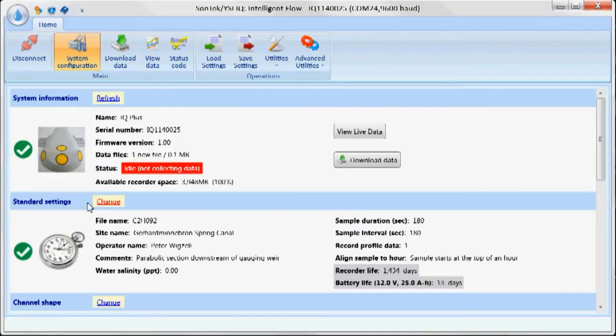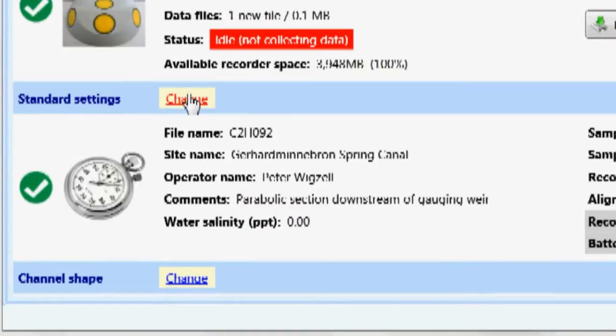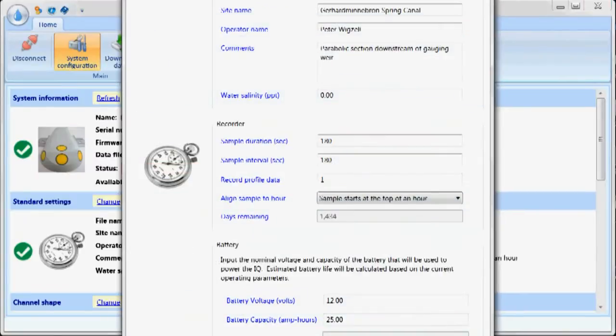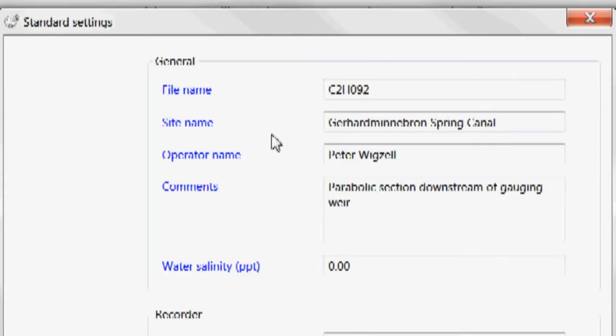The standard settings, this is where we set it up for our particular site. So I click on change. I can enter the file name, the site name, the operator name, any comments. I'll input the salinity in this case. In most cases, especially in irrigation, it's going to be set to zero.